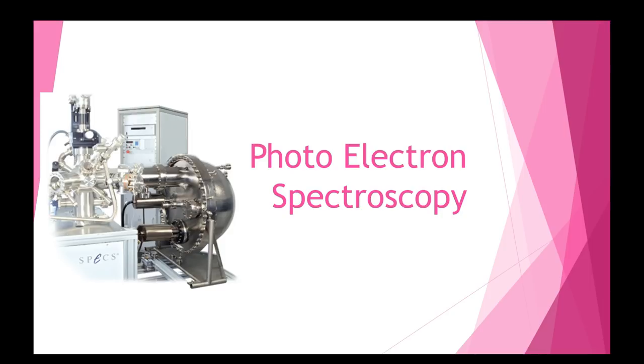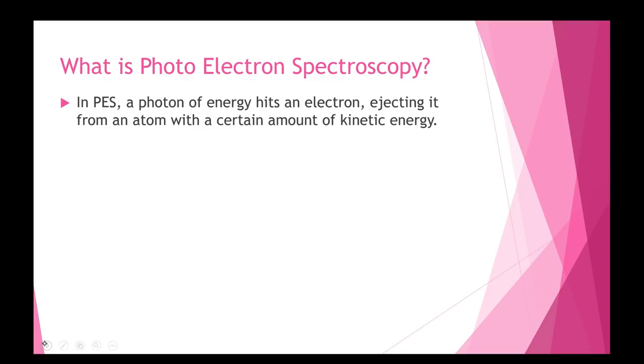And what it does do is it provides evidence for orbitals. I know we've learned that Schrodinger and Maxwell and a bunch of other people contributed to determining the mathematical relationship of orbitals and quantum numbers. But this is physical evidence where they can actually prove it. And so the way it works is in photoelectron spectroscopy, they take a photon of a certain energy, hits an electron, it pops it off the atom. And when it pops it off the atom, it's ionized. It's ionization energy.